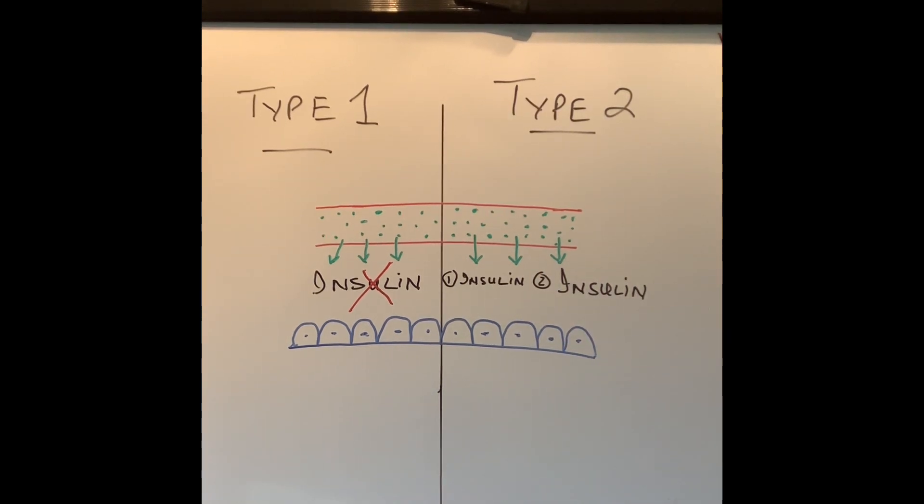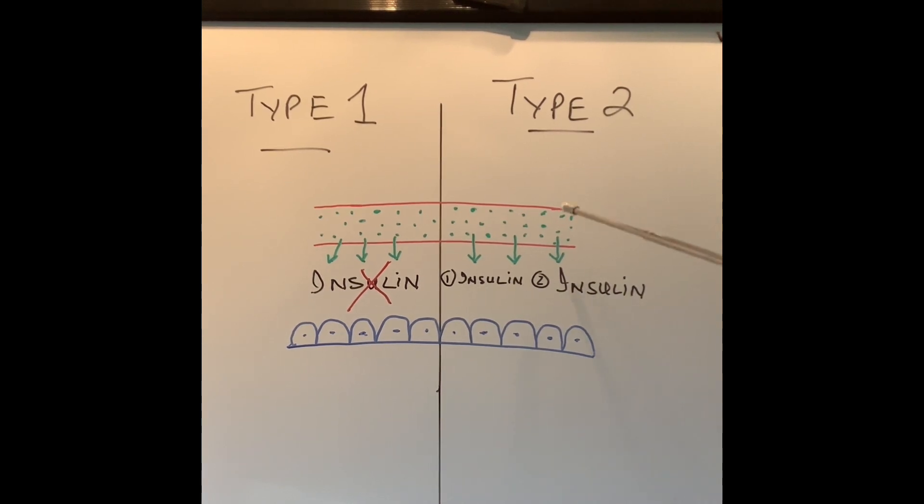So again the blood sugar or glucose cannot come into the cells. And since the blood glucose is not coming into the cells, the blood glucose level keeps going up and that will cause damage to our tissues as I explained earlier if it's not treated.